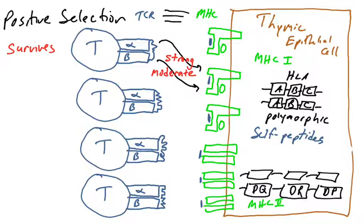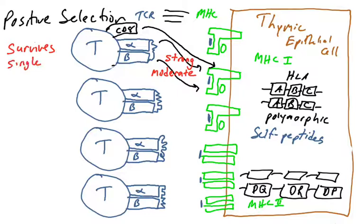One thing that occurs as a result of positive selection is the T cell gets a survival signal — it gets to go out into the world and work. The other thing that happens is selection of either CD4 or CD8. All of these cells are double positive. If the T cell receptor has affinity for MHC class I, the CD8 molecule will bind MHC class I, and the cell will turn off the CD4 gene. It no longer makes the CD4 protein and becomes a single positive CD8 cytotoxic T cell, allowed to survive and go out to check MHCs for infection.